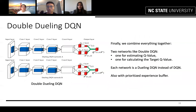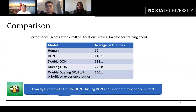Finally, we combine everything together into what is called Double Dueling DQN with Prioritized Experience Buffer. It has two networks like Double DQN — one for estimating the Q value and one for calculating the target value — and each network is a Dueling DQN instead of a plain DQN. We also employed the Prioritized Experience Buffer in this final model, and compared the performance of all models after two million iterations.